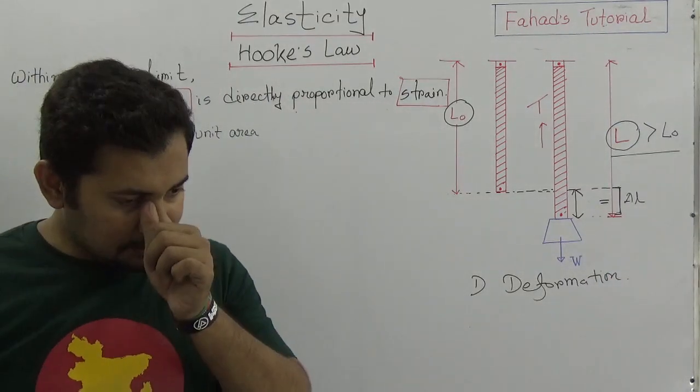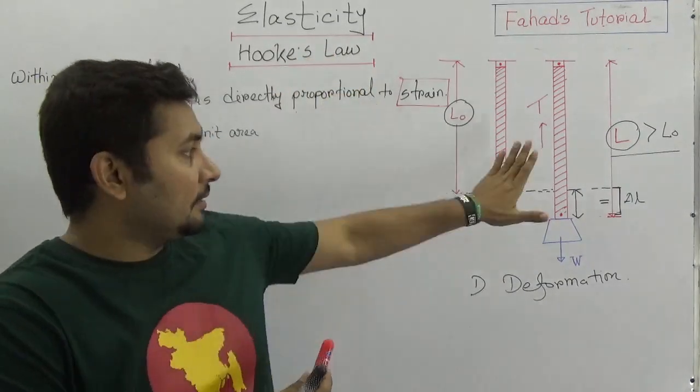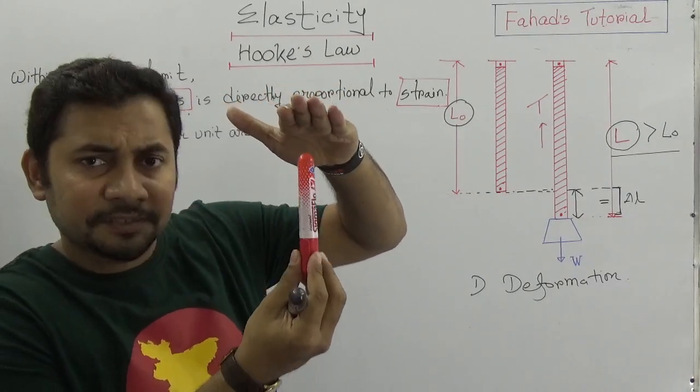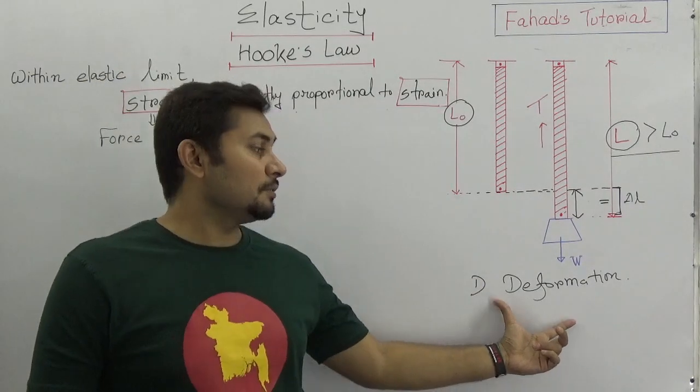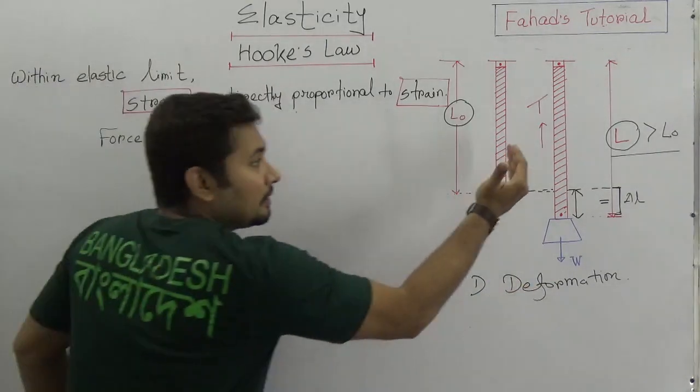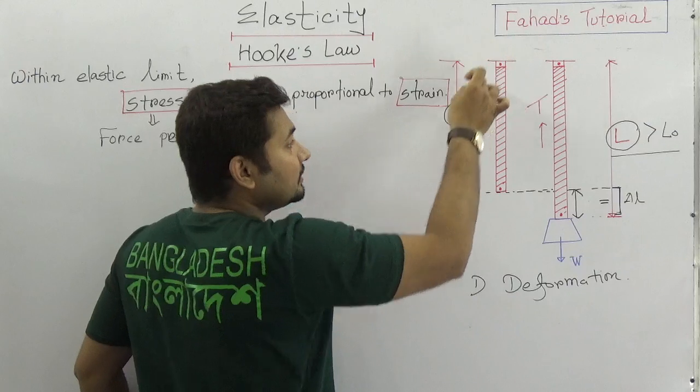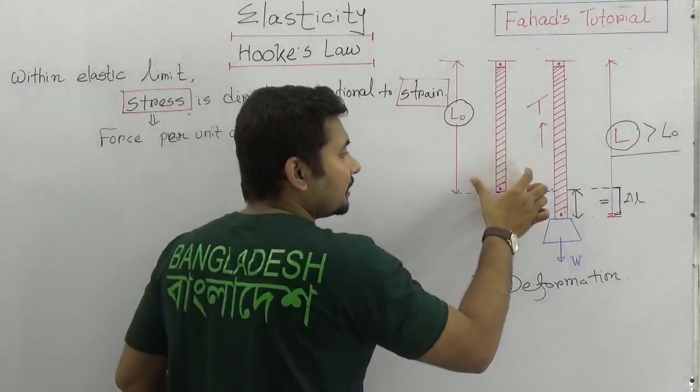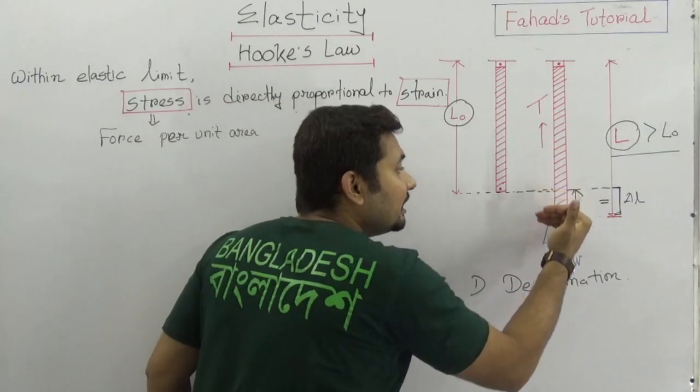Deformation means suppose you are applying a force and then there is some change of its shape. That change of its shape by applying force is known as deformation. And for that deformation suppose this is a rod. It starts in one side and this is the previous length of this rod. Now if you think that a weight has been pulled down to downwards and then it gets a new shape.